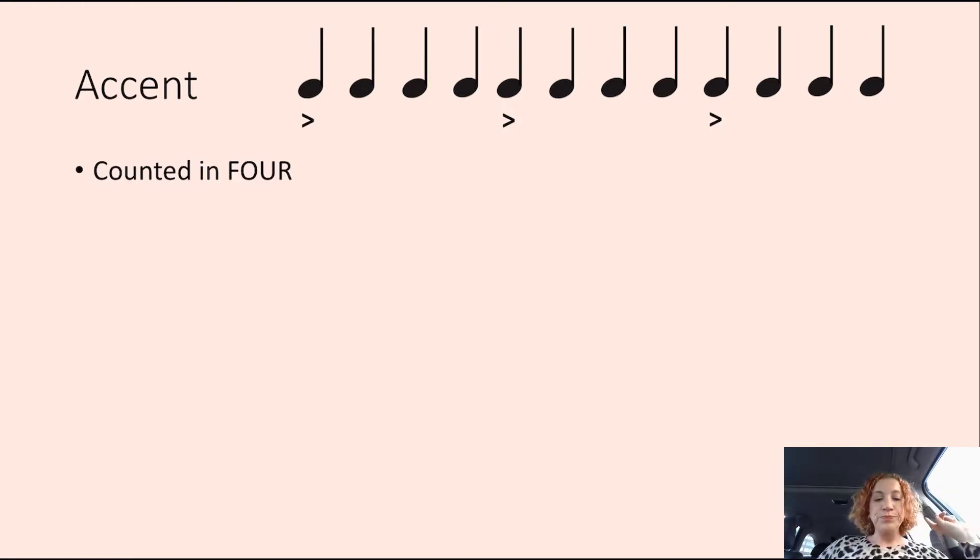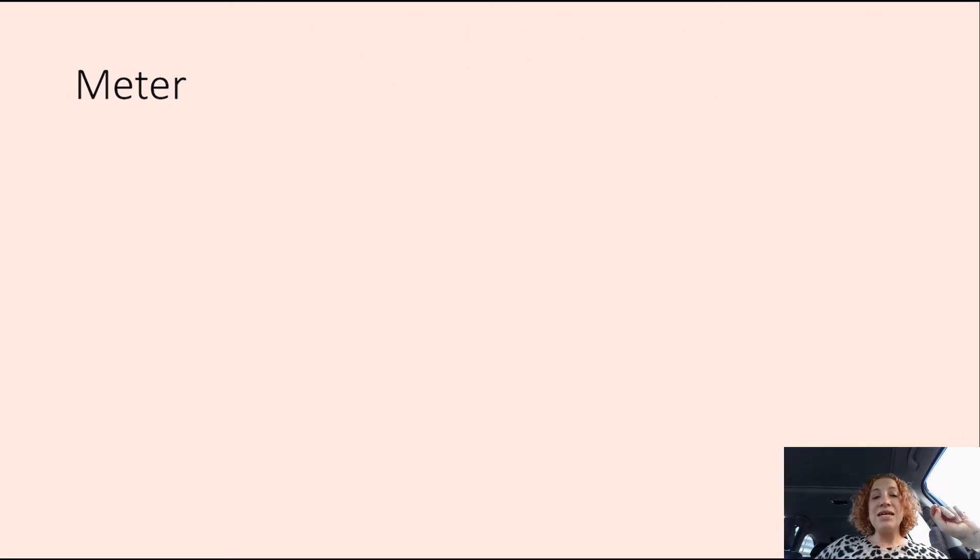Like your ear literally can't tell where it begins or it ends. It's just a string of claps. So if accents on specific beats can tell us we should count in two or three or four, what is the definition of meter?